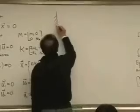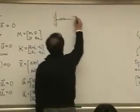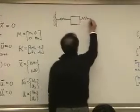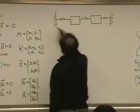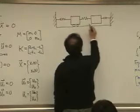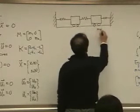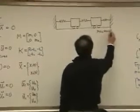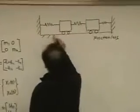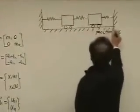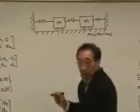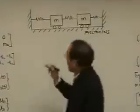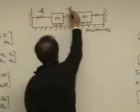Suppose we have a vibratory system like this. This is our frictionless flow. Correction, massage. To start with, suppose we have a very special case: M and M, the same mass and the same stiffness K, K, K.